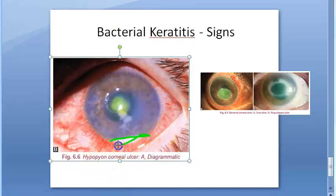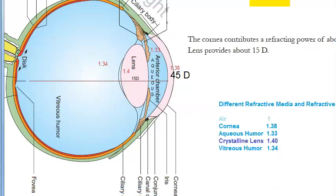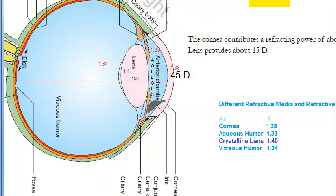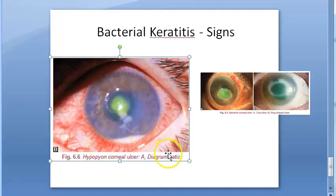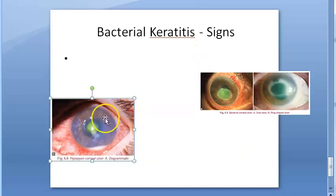As this is bacterial, you can see a hypopyon — 'pyo' means pus. White leukocytes accumulate in the anterior chamber, just behind the cornea. In bacterial keratitis, the hypopyon formed will be sterile — meaning no bacteria in it — because bacteria cannot penetrate Descemet's membrane. In fungal keratitis, however, fungal hyphae can penetrate, so it may not be sterile.